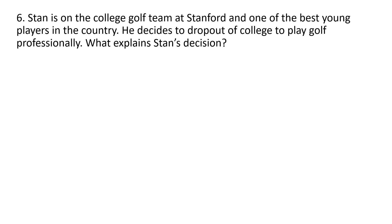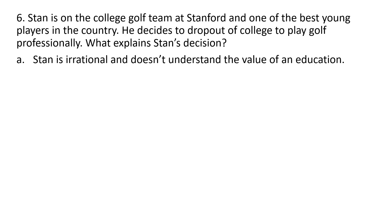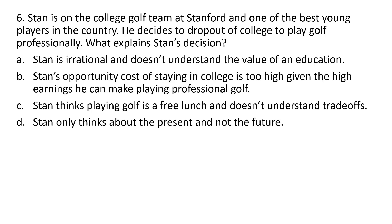Question 6. Stan is on the college golf team at Stanford and one of the best young players in the country. He decides to drop out of college to play golf professionally. What explains Stan's decision? The correct answer is B: Stan's opportunity cost of staying in college is too high, given the high earnings he can make playing professional golf.